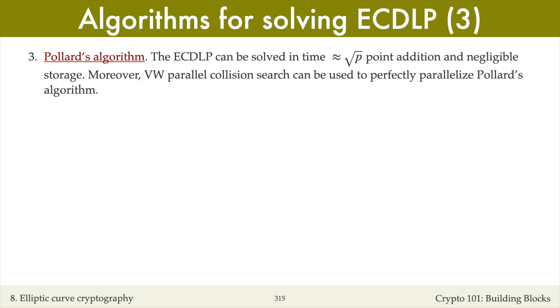The third method for solving the ECDLP is Pollard's algorithm. This algorithm has the same running time as Shanks' algorithm but has negligible storage requirements. Moreover, the Van Oorschot-Wiener collision-finding algorithm for hash functions that we saw in Chapter 3 can be adapted to perfectly parallelize Pollard's algorithm. I won't describe Pollard's algorithm in this lecture, but you should remember that Pollard's algorithm is the fastest method known for solving the ECDLP, with the exception of two special families of elliptic curves that can be easily avoided in practice.